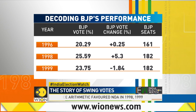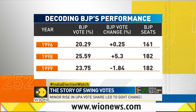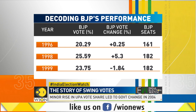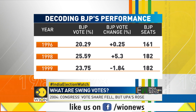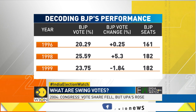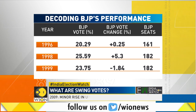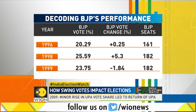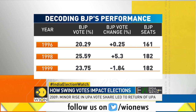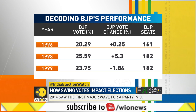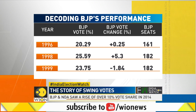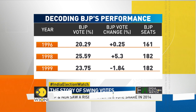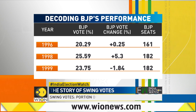It ended up winning 182 seats and formed the NDA government. After regional parties pulled out of the NDA in 1999, leading to another election, BJP's vote share actually fell by nearly 2%. But they still got 182 seats and formed a stable government at the centre that lasted an entire five-year term.